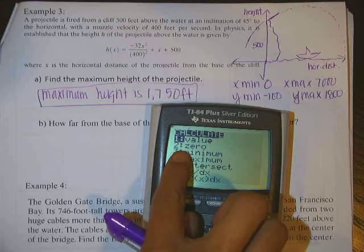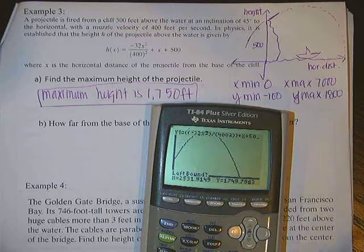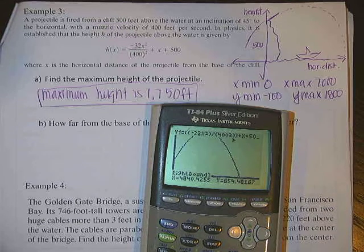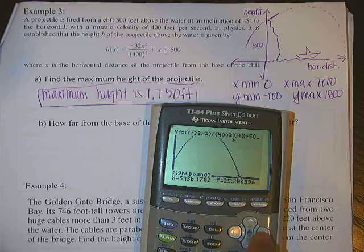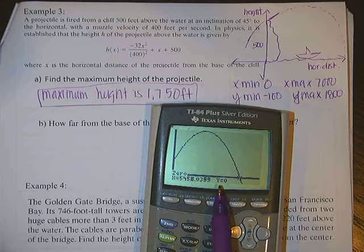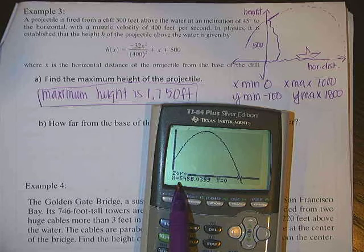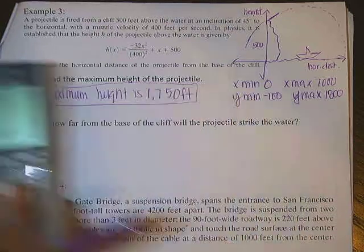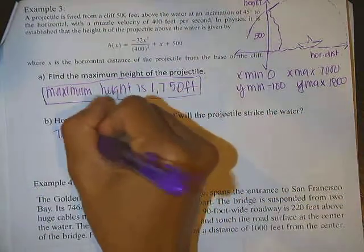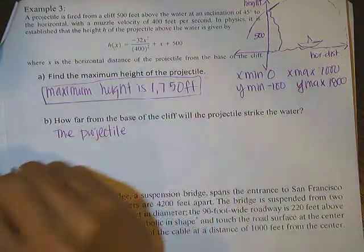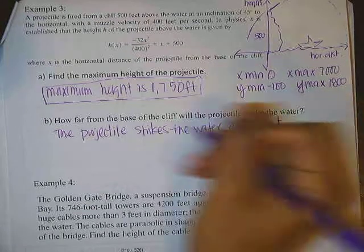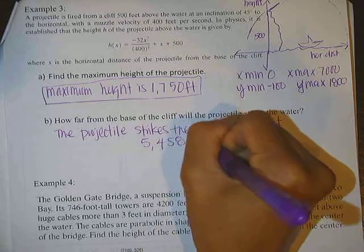Not window, second trace. Go to the zero. Zero is another word for x-intercept. And it says left bound again. So I'm going to go close to it. Move my cursor. There you go, that's on the top, that's left bound. Hit enter. Right bound, meaning now my y value should be negative on the negative side. So hit enter. And it's going to give me zeros when y is zero. So this is a perfect answer. Let's see how far that is. X is about 5,458.04 feet from the base. So the projectile strikes the water at about 5,458.04 feet from the base.